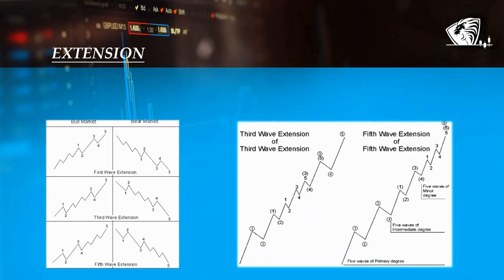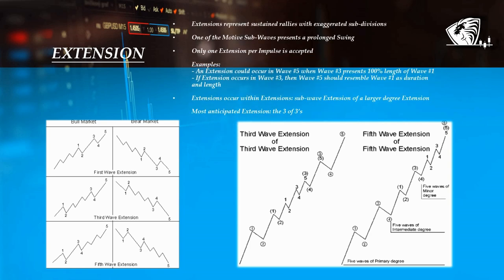Extensions represent those sustained rallies with exaggerated subdivisions in which one of the motive subwaves themselves presents a prolonged move. Only one extension per each impulse is accepted and this provides a very useful guide on expected lengths of upcoming waves. For example, if wave 3 has the same length as wave 1, then we could most probably expect an extension in wave 5, or if wave 3 extends, then wave 5 should resemble wave 1 as duration and length.